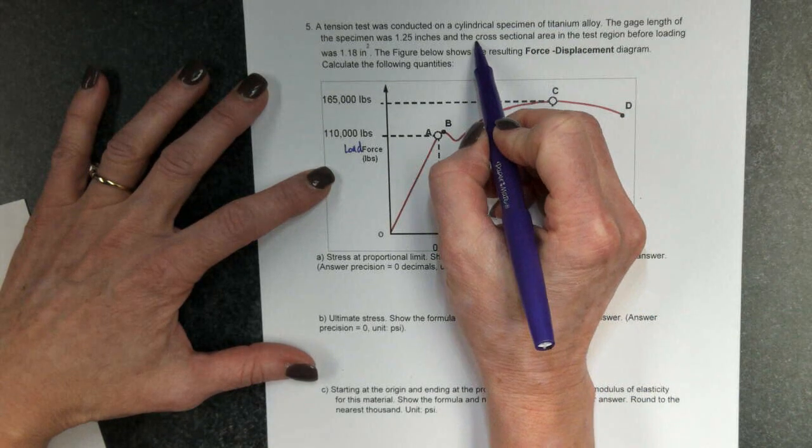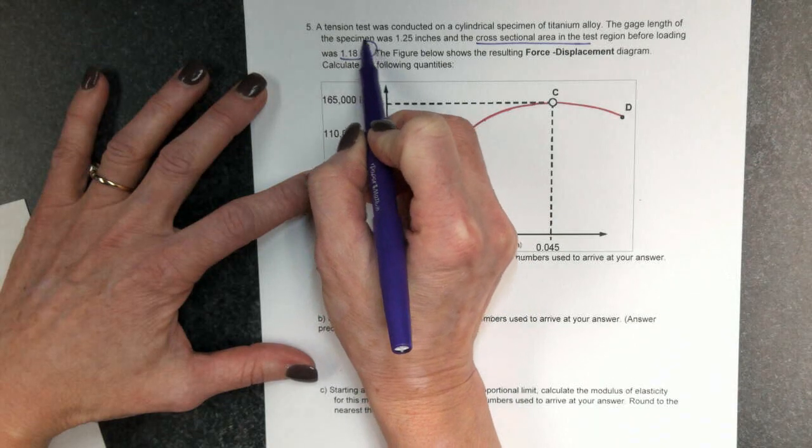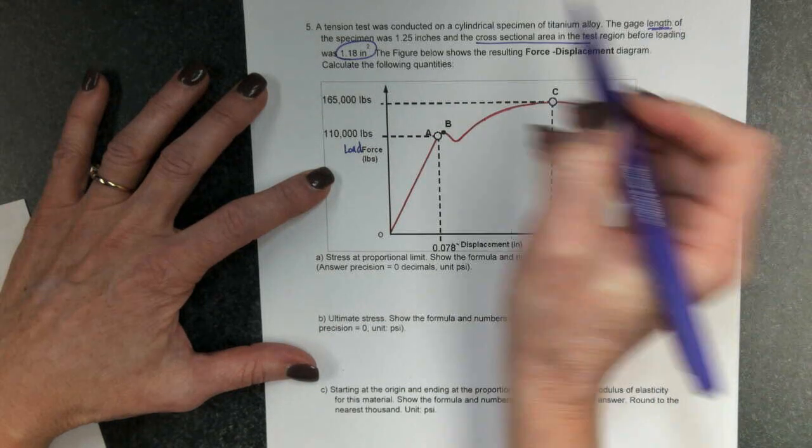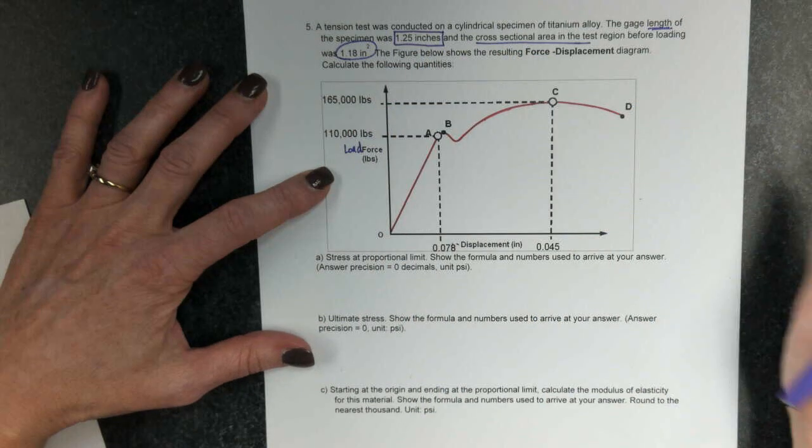Usually, that's going to be given to you in the problem. So my cross-sectional area is 1.18 inches squared, and my original length was 1.25 inches. That's given to me in this problem.